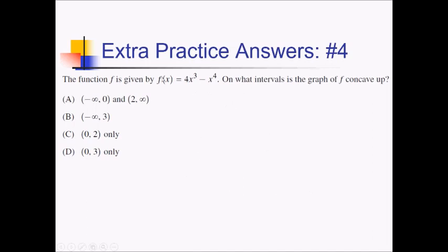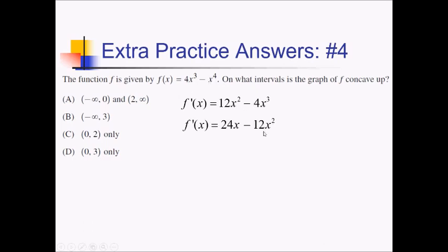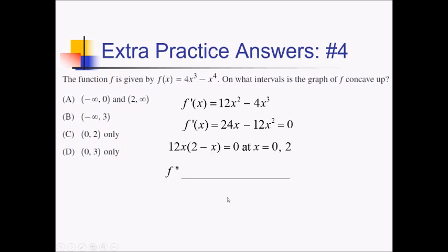On this problem, we're given this f of x polynomial, and we want to know where it's concave up. For that, we need to know where f double prime is positive. f prime is going to be 12x squared minus 4x cubed, and then taking another derivative to get f double prime, we've got 24x minus 12x squared. Setting this equal to zero, I can factor out a 12x, leaving me with 2 minus x. So for critical values, I've got x equals 0 and positive 2. Putting those on an f double prime number line.